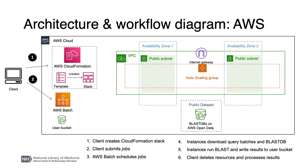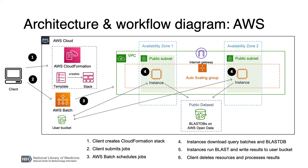Elastic Blast submits jobs to AWS Batch, which schedules those jobs on the resources it created. These jobs run on EC2 instances, which download the data they need, run BLAST, and write the results to the user's result bucket. Finally, after Elastic Blast completes its job, the client invokes the Elastic Blast delete command to shut down all cloud resources.